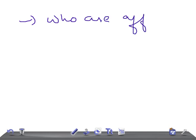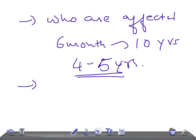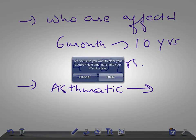Those most commonly affected are children from six months to around 10 to 12 years of age, with the most common age being four to five years — school-going children. Children who are asthmatic are at higher risk of developing this infection and are more at risk of progressing to severe respiratory illness.